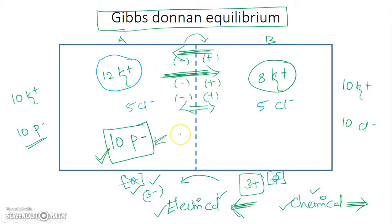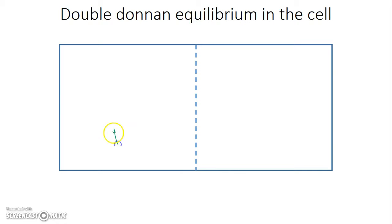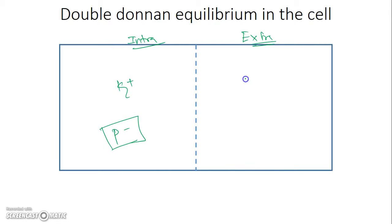Let us see what actually happens in a cell. In a cell, this is the intracellular compartment and this is the extracellular compartment. In the intracellular compartment, proteins are the impermeable ions and potassium is the matching positive ion. In the extracellular compartment, sodium is the positive ion, but at resting state the membrane is not permeable to sodium, and chloride matches the sodium concentration.